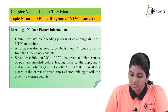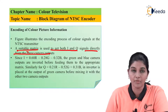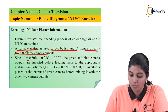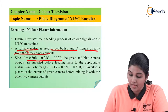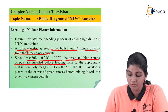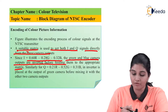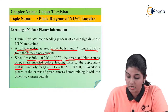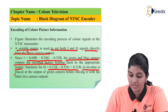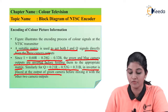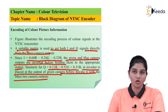A suitable matrix is used to generate I and Q signals directly from the three camera outputs. The I signal is given as 0.60R minus 0.28G minus 0.32B, and the green and blue camera outputs are inverted before feeding them to the matrix. Similarly, the Q signal is generated as 0.21R minus 0.52G plus 0.31B. The inverter is placed at the output of the green camera before mixing it with the other two camera components. In this way, the I and Q components are obtained.